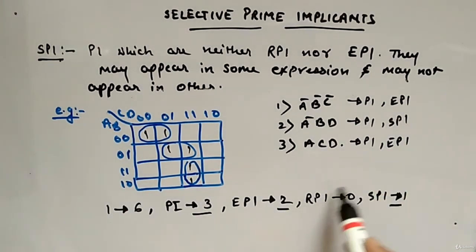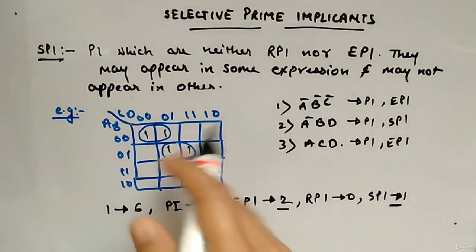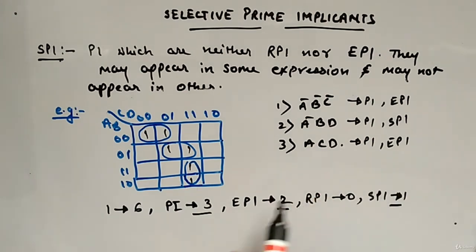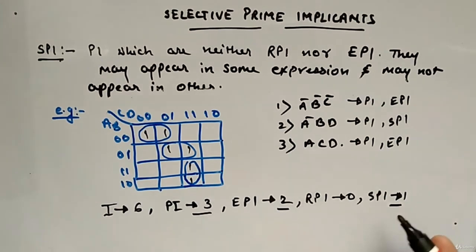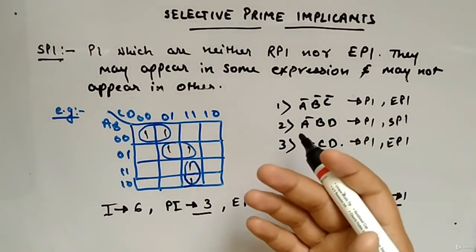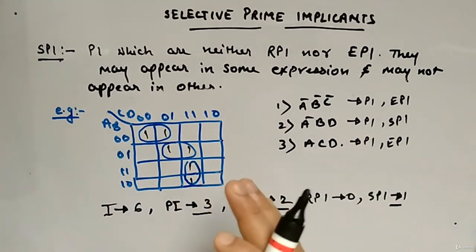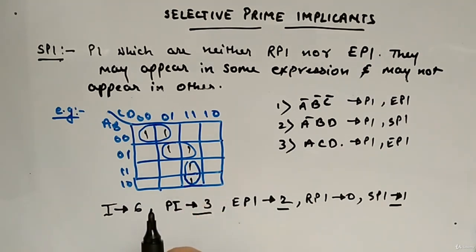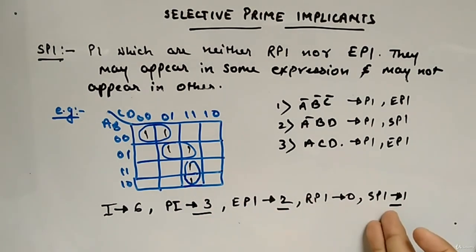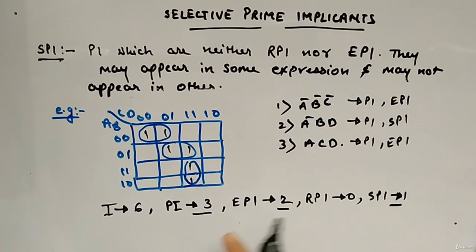These two are essential prime implicants and this is selective prime implicant. This may or may not occur in the solution — it really depends upon the K-map. Now you know about implicants, prime implicants, essential prime implicants, redundant prime implicants, and selective prime implicants. Whenever it is being asked, you can now answer it. Just be careful — don't mess up with definitions. Sometimes you will get confused between redundant prime and selective prime — so be clear with definitions and you will be able to find everything. Thank you.